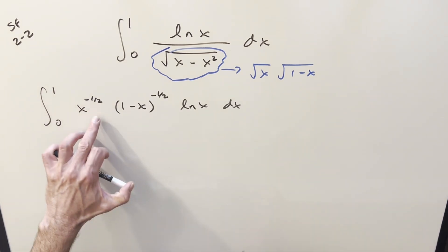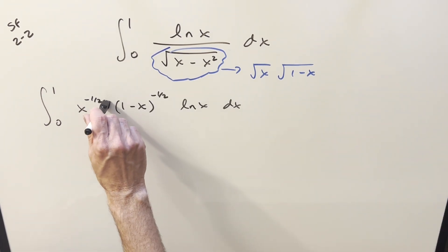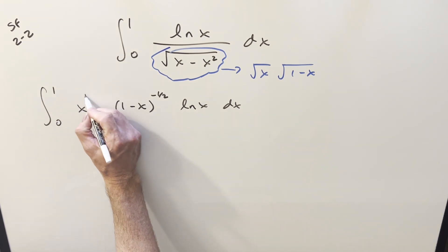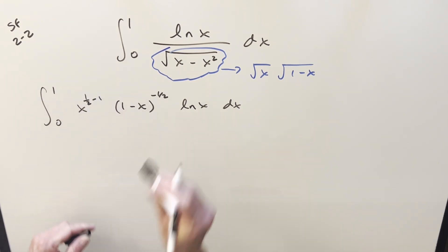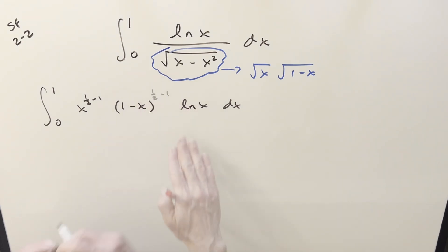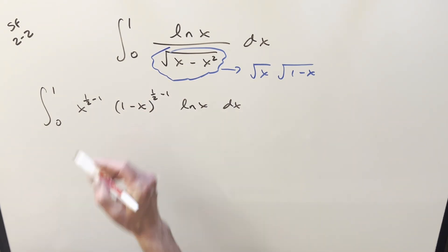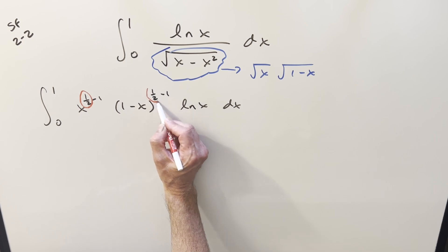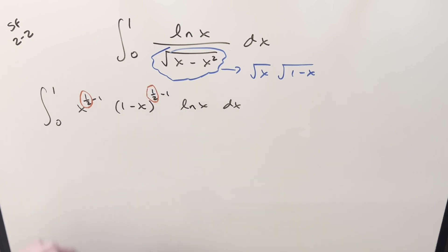I also want to change these exponents and write them a little differently. Instead of writing that as minus one half, I can write that as one half minus one, and do the exact same thing on the other factor. Focusing on these exponents, what's left is just the beta function. So for this integral, we can actually look at it as the derivative of the beta function. I did a previous video on this deriving it — it's just Feynman's trick.